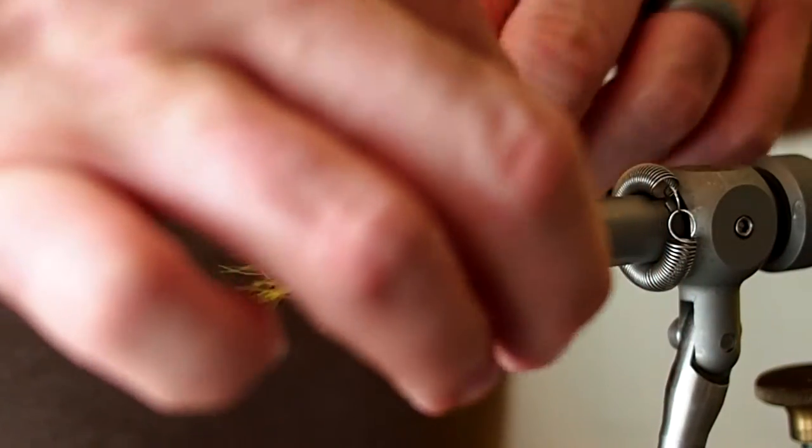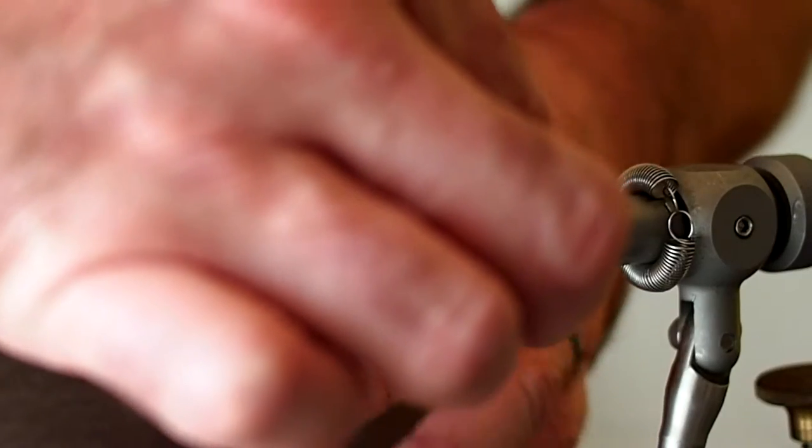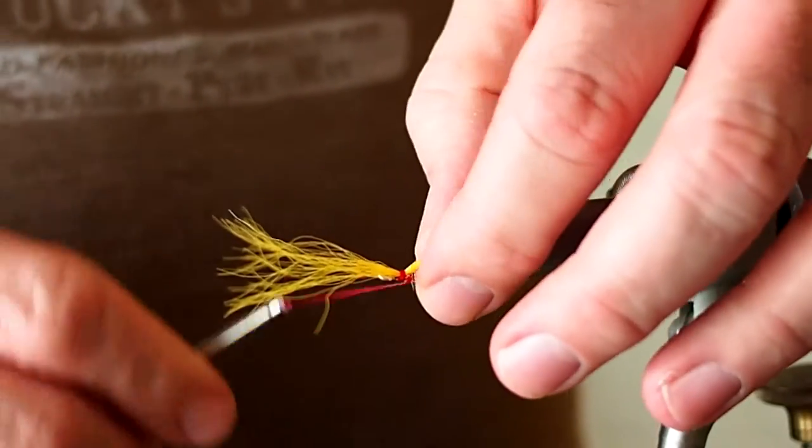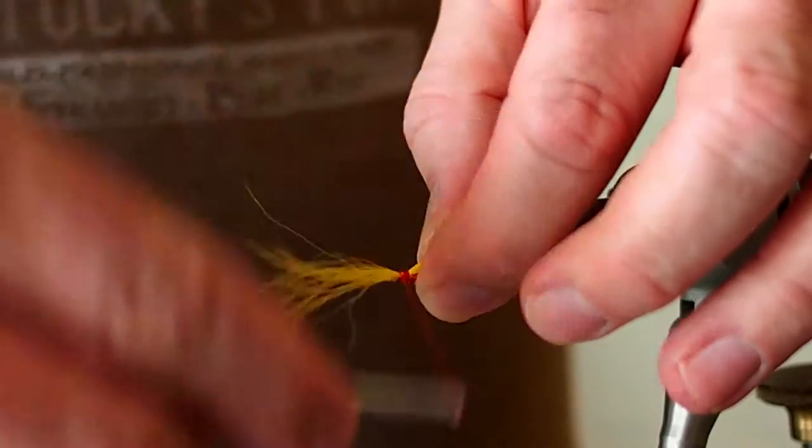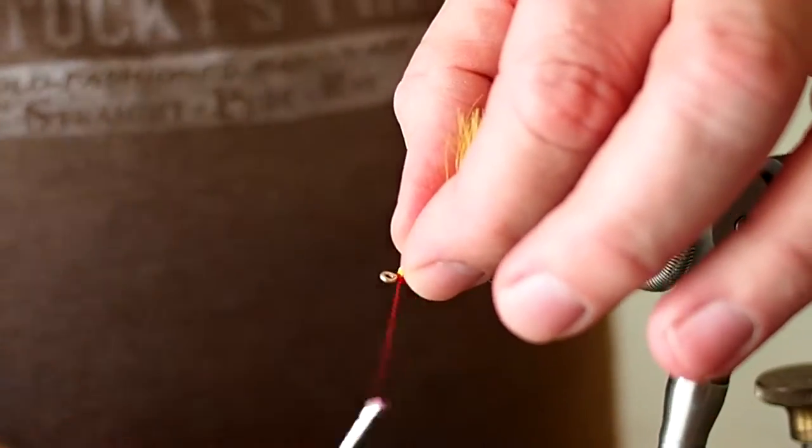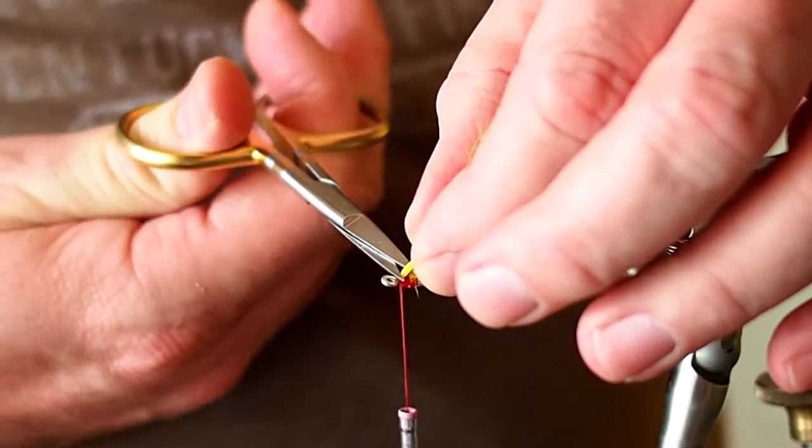I'm just going to lift up the throat and make a couple of thread wraps behind. That just helps the throat stand up. And then advance my thread forward, couple wraps in front of our tag end, and snip away the excess.